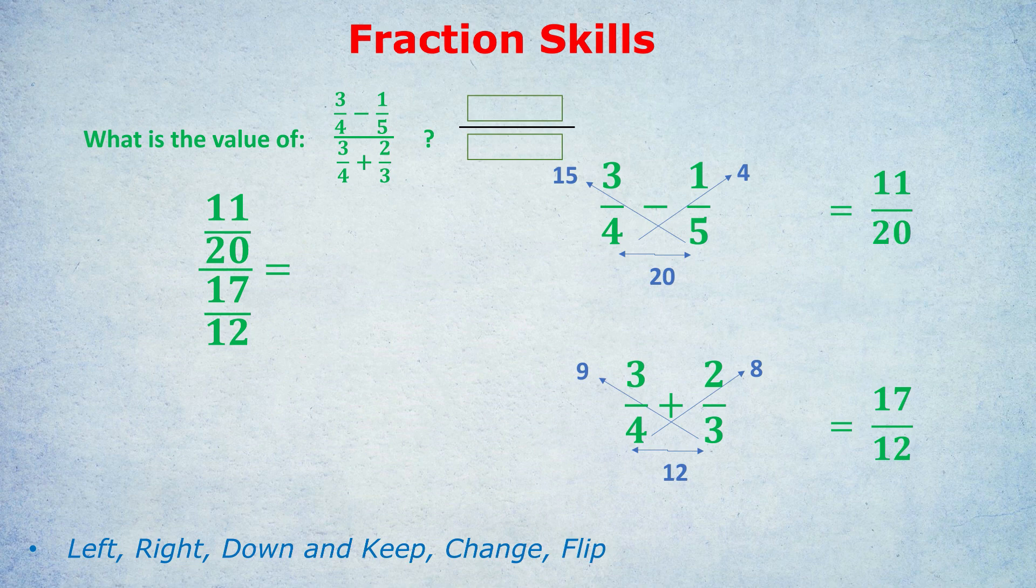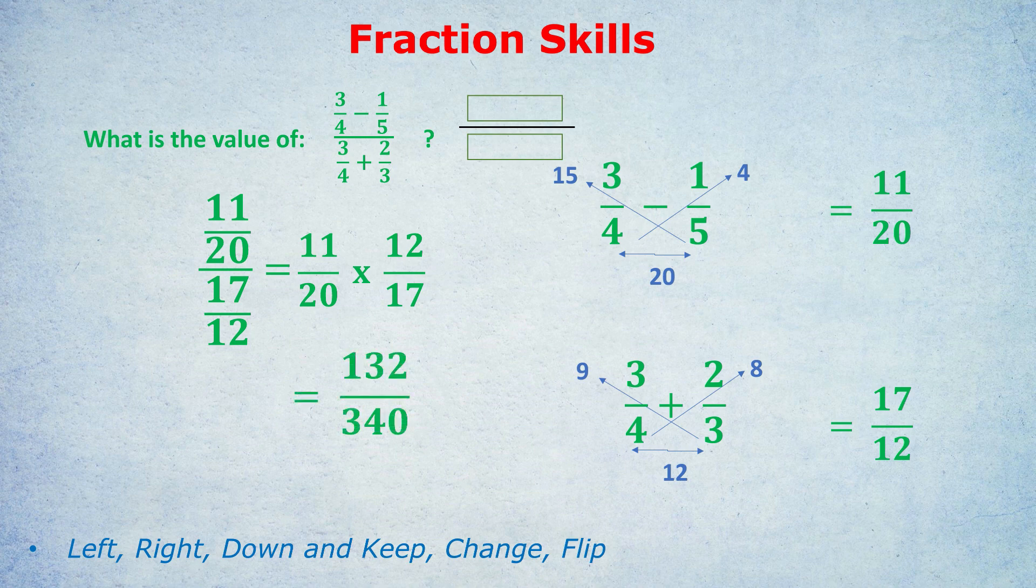Keep, change, flip. We keep the 11 20ths the same, change the divide into a multiply, and flip the second fraction. So it's 11 20ths times 12 17ths. Now, again, you can cross, cancel out, and simplify, or just work it out normally. So 11 times 12 is 132, and 20 times 17 is 340. The good news on the GRE, you don't have to simplify that fraction. You can just write it, and that will count as the right answer.